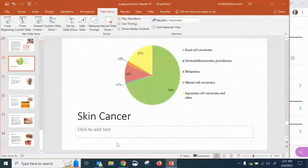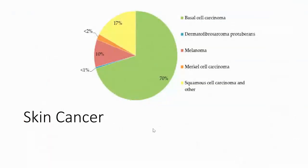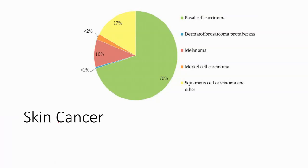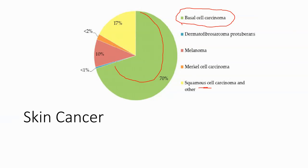Hello and welcome back for part three of integumentary. We'll start with skin cancer. Looking at this graph, basal cell carcinoma accounts for 70% — the most common type of skin cancer. Second is squamous cell carcinoma, and the last and most serious one we'll talk about is melanoma, being about 10% of skin cancers.